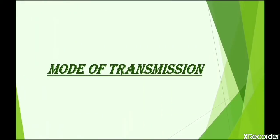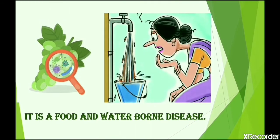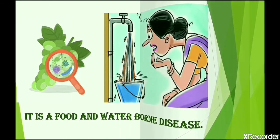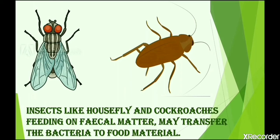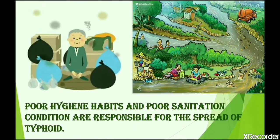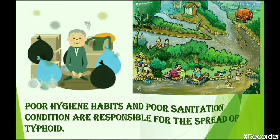Mode of Transmission: It is a food and water-borne disease, so it spreads through contaminated food and contaminated water. Insects like houseflies and cockroaches act as vectors because they feed on fecal matter and may transfer bacteria to food material. Poor hygiene habits and poor sanitation conditions are responsible for the spread of typhoid.